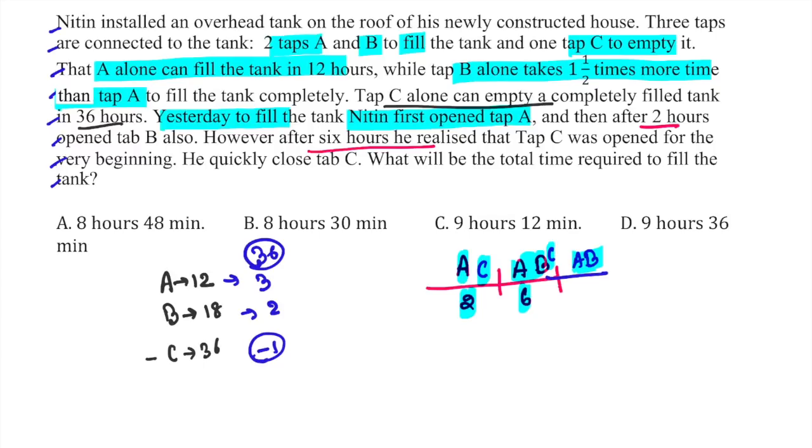Now we need to write the efficiencies: A with C efficiency is 2, ABC total efficiency is 4, and AB efficiency is 5. So we have efficiency 2, time is 2, so we have 4 work done. Efficiency 4, time is 6, we have 24 work done.